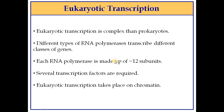Each RNA polymerase in eukaryotes is made up of around 12 subunits or even more, whereas in prokaryotes there are only five subunits present. There are several transcription factors required for the transcription process in eukaryotes, whereas there are no transcription factors involved in prokaryotes. In eukaryotes, transcription takes place on chromatin, whereas in prokaryotes it is on the naked DNA.